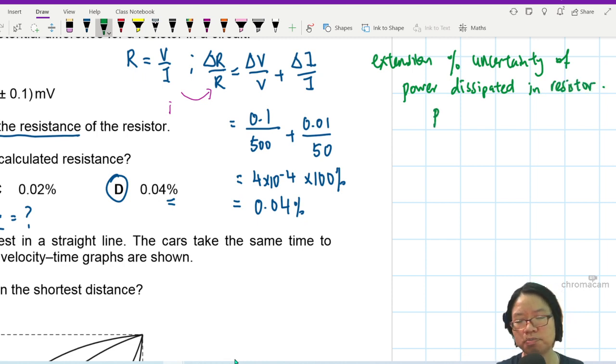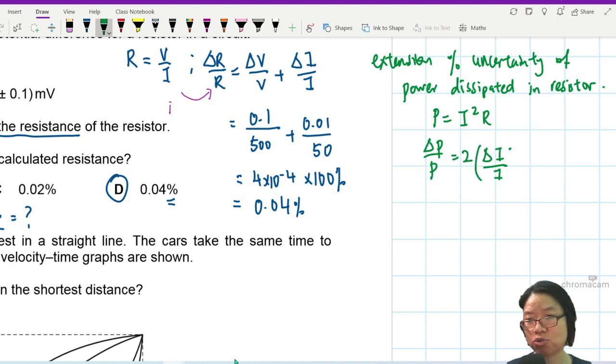So you could obviously just use P is equal to VI. But let's say for discussion sake, I decided to use I square R. So then to find the percentage uncertainty in P over P, I will take the percentage uncertainty in I over I, but I use I two times in my I square. So I will multiply this one by 2.